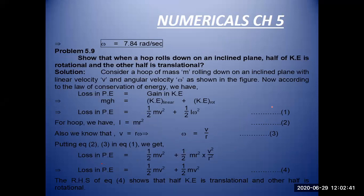Angular displacement as well. We will show that when a hoop rolls down an inclined plane, half of kinetic energy is rotational kinetic energy and half is translational energy. Consider a hoop of mass m rolling down on an inclined plane, where v is the linear velocity and omega is angular velocity.